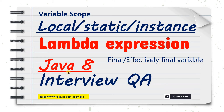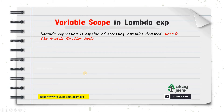Hello friends, welcome back to Java at Interview. In this video we'll talk about variable scope in lambda expressions. We'll talk about local variables, static variables, and instance variables. We'll also talk about final and effectively final variables in lambda expressions. So let's begin the video.